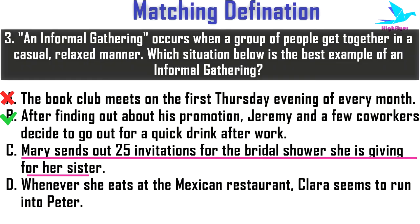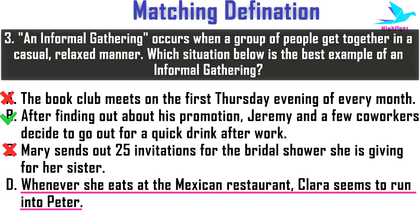Option three: Mary sends out 25 invitations for the bridal shower she is giving for her sister. This is a planned social event, so it can never be an informal gathering. Option four: Whenever she eats at the Mexican restaurant, Clara seems to run into Peter. This is a coincidental meeting between two people, so it is also not an informal gathering. The answer is option B.